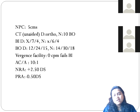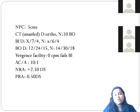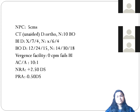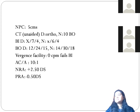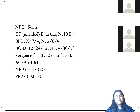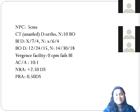Always compare these values with the normative data. Sometimes PRA is around minus 5 or minus 6 and we get confused — but don't. Just compare with the AC/A ratio and base-in for near to see whether it is relevant. This is a clear-cut case of convergence excess.